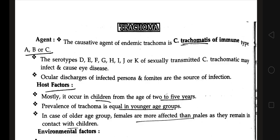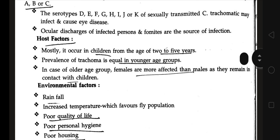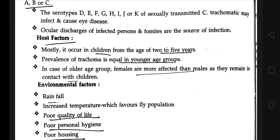The serotypes D to K of sexually transmitted C. trachomatis can spread infection and cause eye diseases. Ocular discharges of an infected person and fomites are the sources of infection. When people come in contact with the ocular discharges of an infected person or with fomites used by an infected person, they will get the infection.